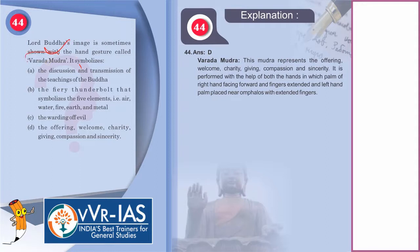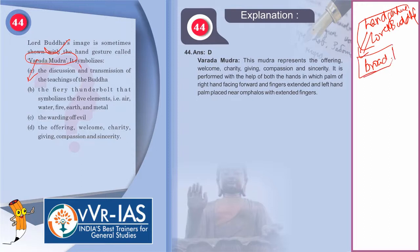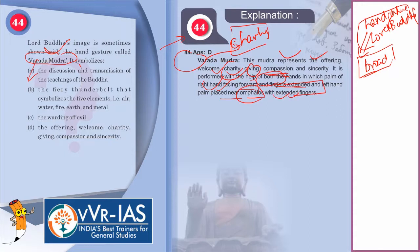Coming to the 44th question: Lord Buddha's image is sometimes shown with hand gestures known as Mudras. You should have a broad idea of what each hand gesture symbolizes — go through the list from your textbook or the internet. The question asks about Varad Mudra. Varad Mudra is a gesture of charity — it represents offering, welcome, charity, giving, and compassion. It is performed with both hands in which the palm of the right hand faces forward with fingers extended, and the left hand palm is placed near the navel with extended fingers.